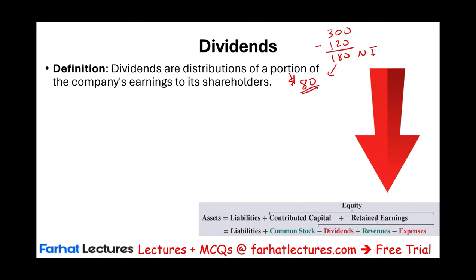Let's look at a multiple choice question from FarhatLectures.com. A retail company issues — meaning sold — common stock worth 20,000 dollars. How does this transaction affect the company's balance sheet? The accounting equation is on the balance sheet. The company issues common stock and receives cash of 20,000 from investors. Answer choice A says: increase an asset and increase equity. When the company receives 20,000 in cash, the asset goes up, and equity goes up as well — A looks correct.